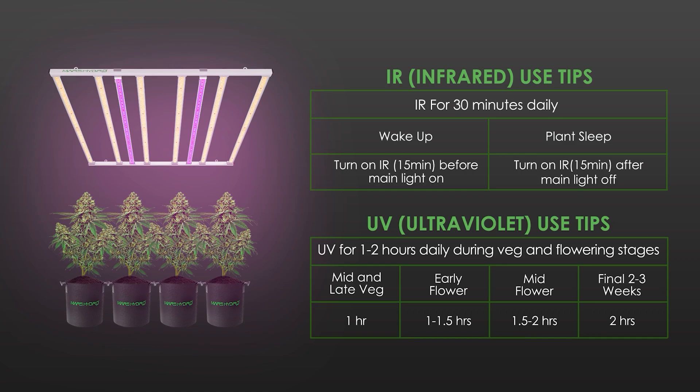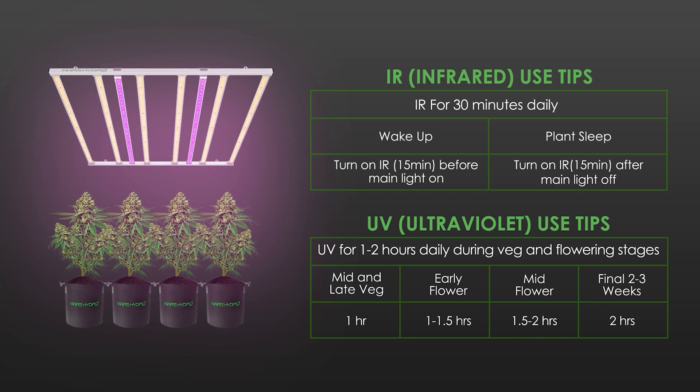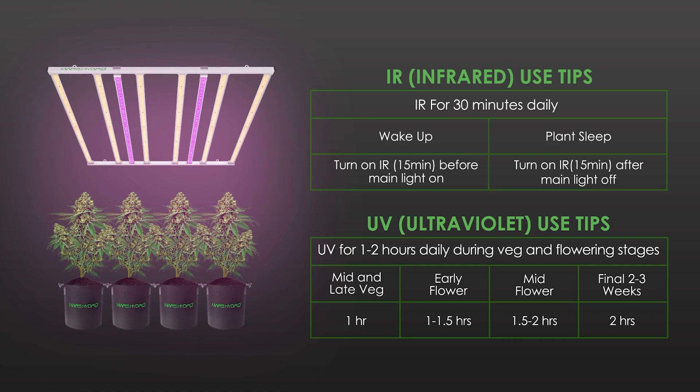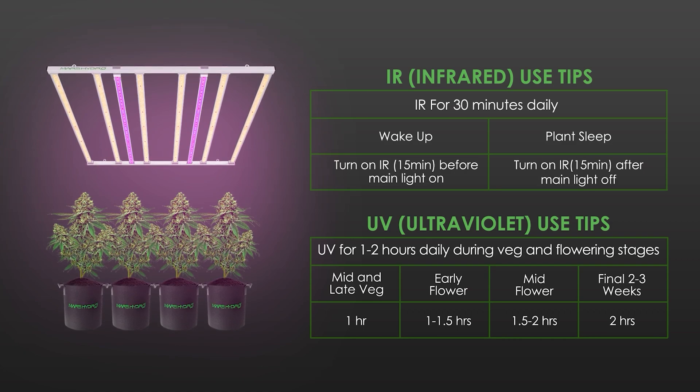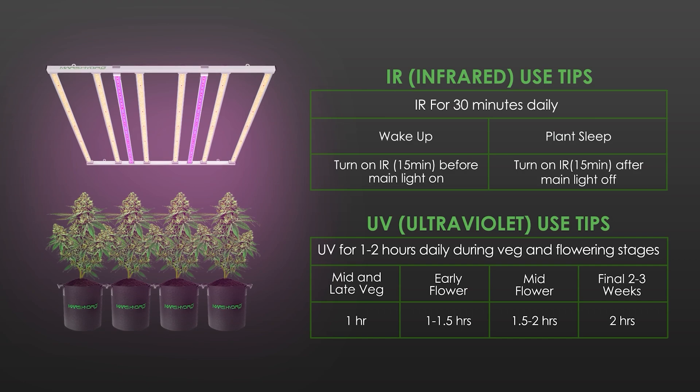For UV, it is necessary to gradually increase the duration of UV exposure and to monitor the plants for signs of stress or damage, as different cannabis varieties may have different tolerances to UV.